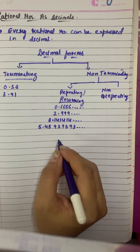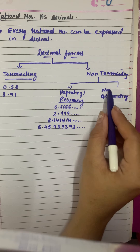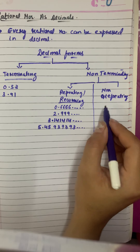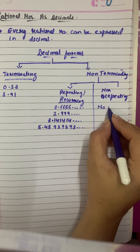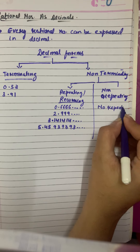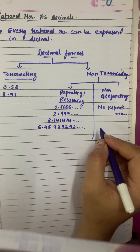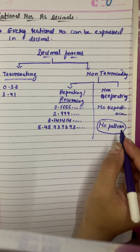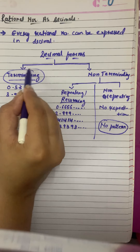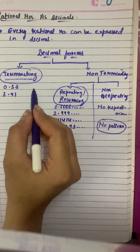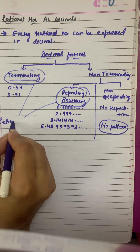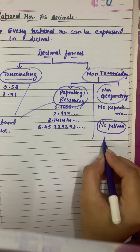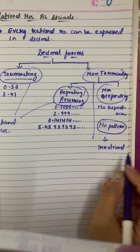Now moving to the next category: non-repeating and non-terminating. As the name suggests, non-repeating means the digits do not repeat, there is no repetition, and the digits after the decimal point form no particular pattern. Terminating decimals and repeating or recurring decimals together form the category of rational numbers, while non-terminating and non-repeating decimals together form the category of irrational numbers, which will be covered later.